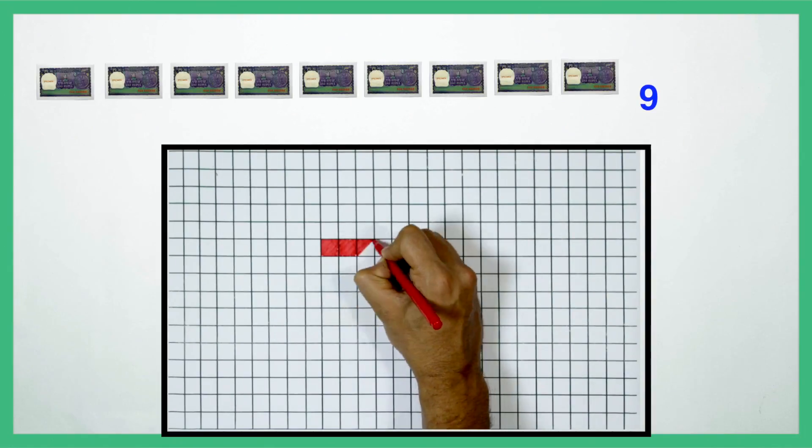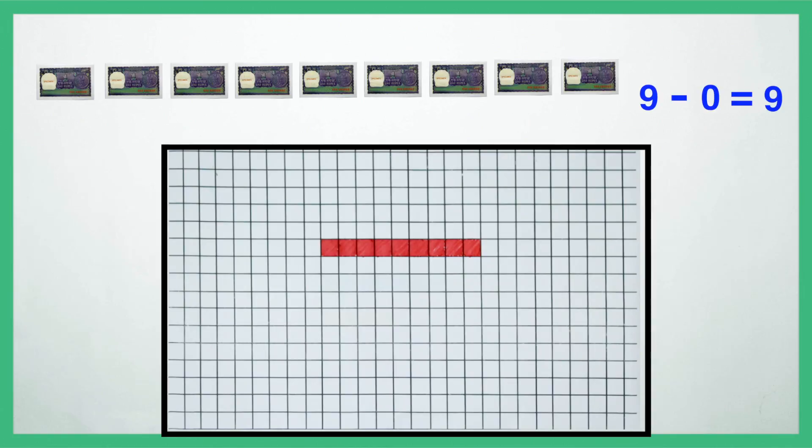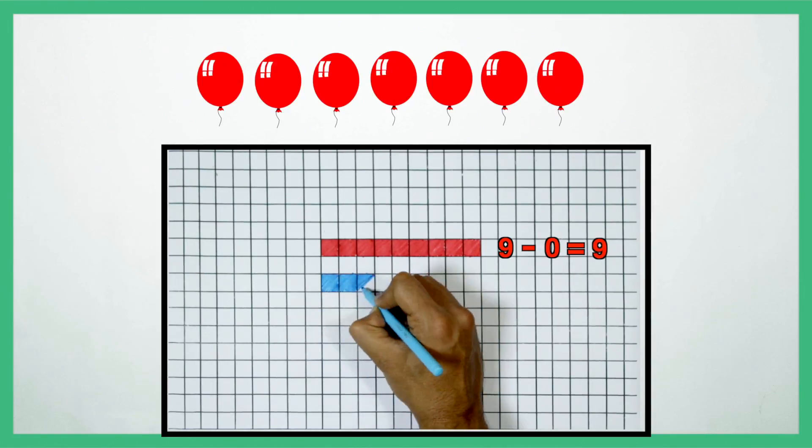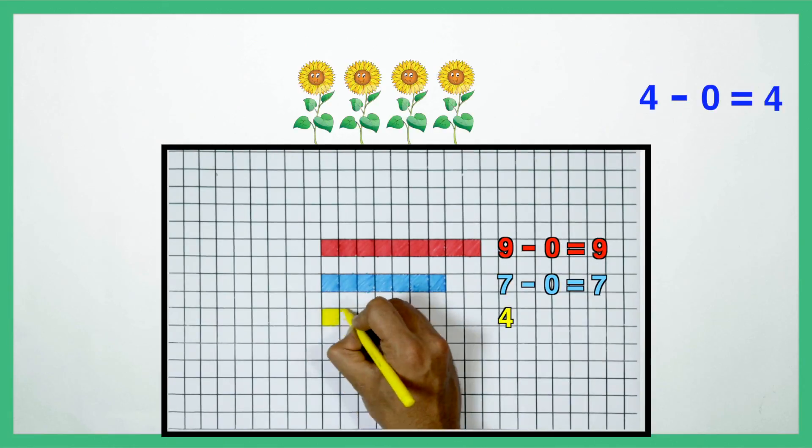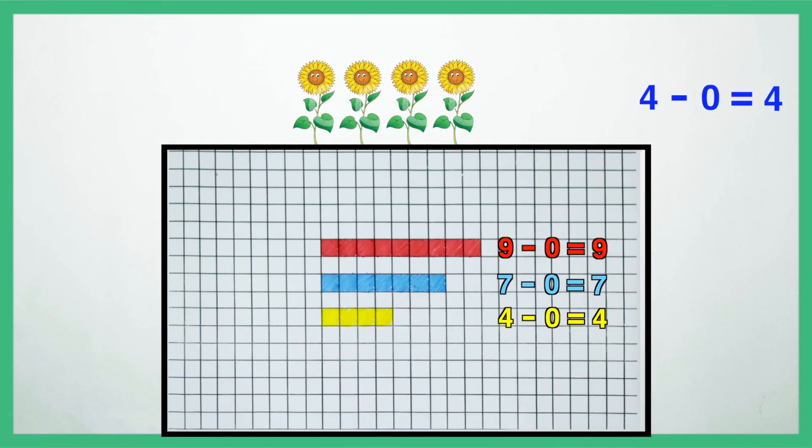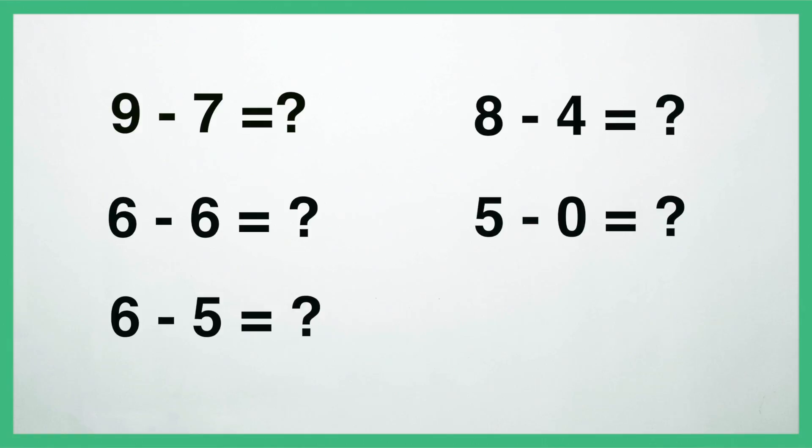But suppose we take away nothing from 9. We still have 9 left. 9 minus 0 is equal to 9. 7 minus 0 is equal to 7. 4 minus 0 is equal to 4. And so on. When we take away 0 from any number, the original number remains unchanged. Let students try some more problems for practice.